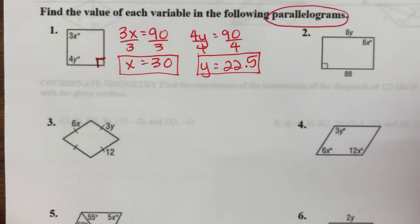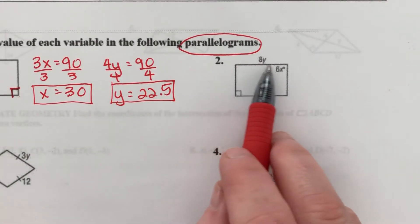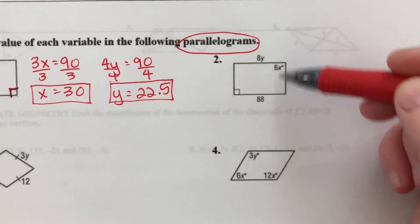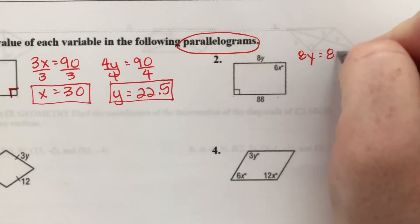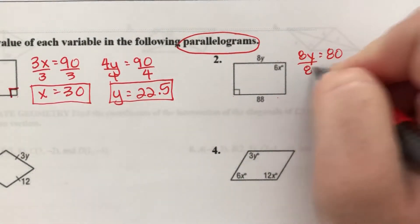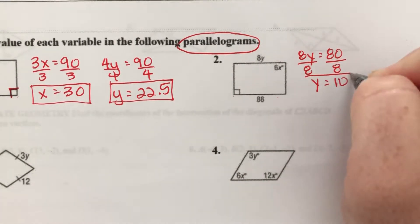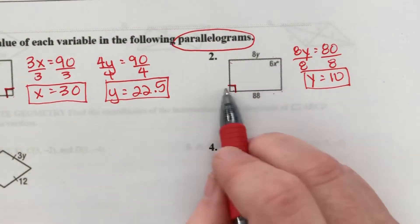Okay, number 2, find all the variables. So here, 8y is the length of this side. This side is 88. In a parallelogram, opposite sides are congruent. So 8y equals 88, so y equals 10. And this angle is 90 degrees, so I know they all must be 90.